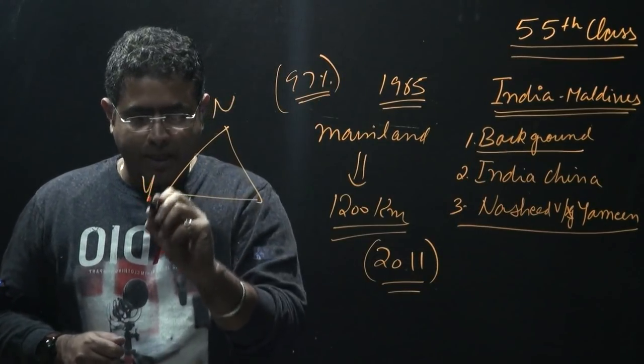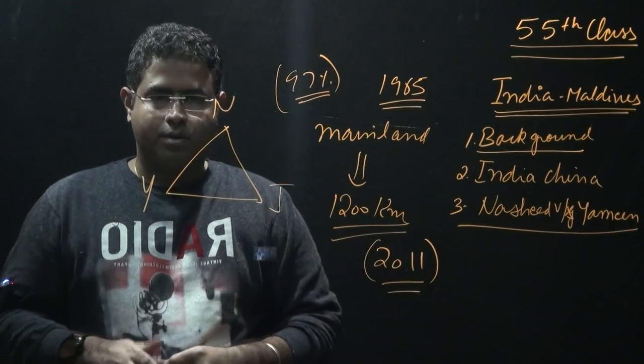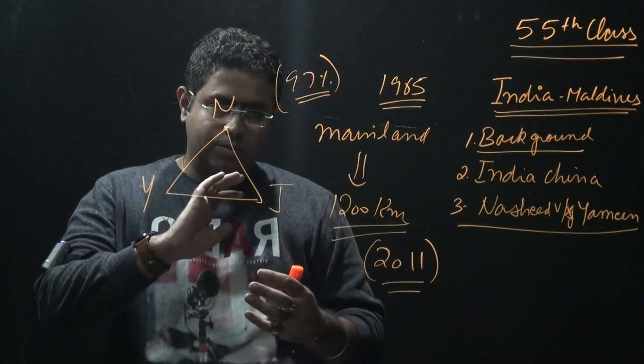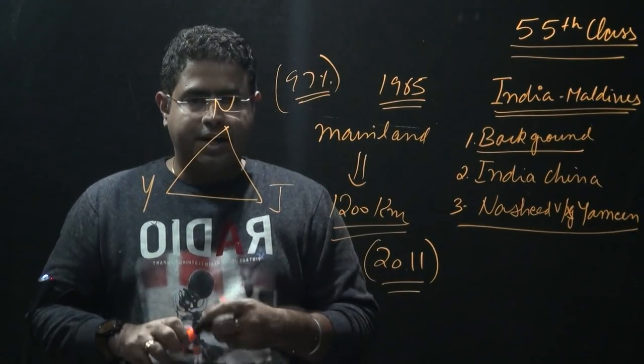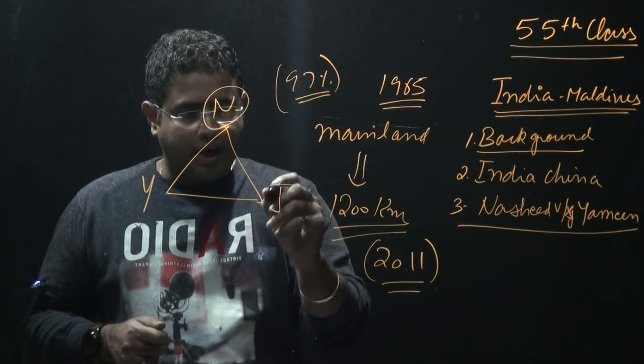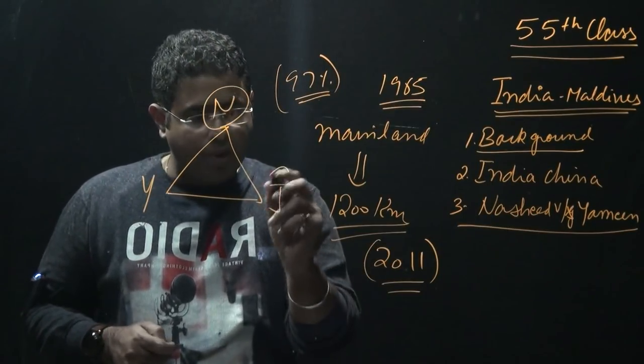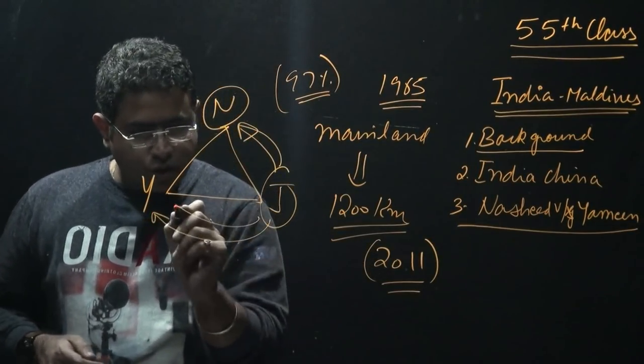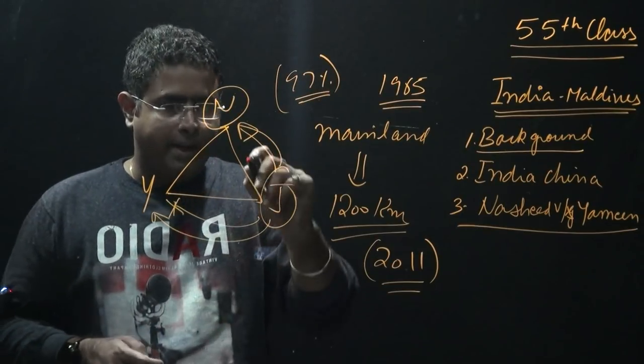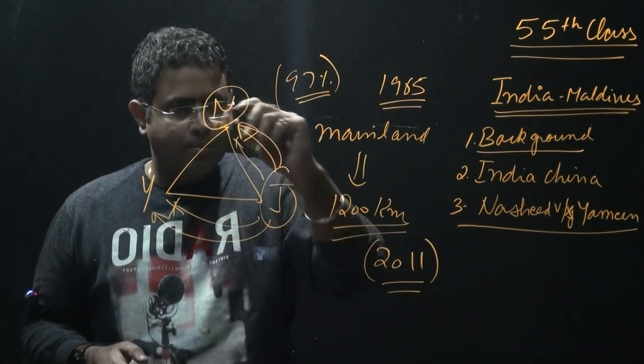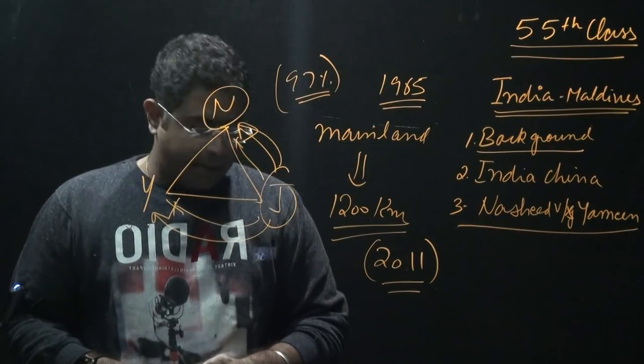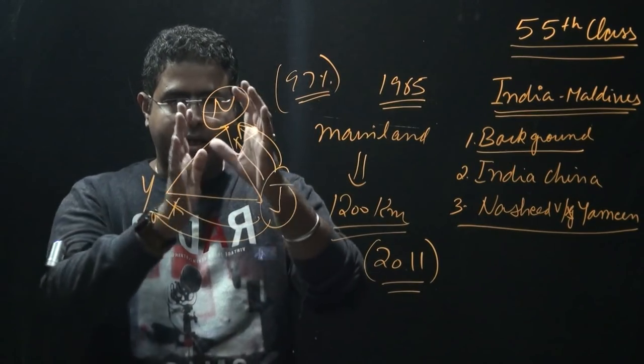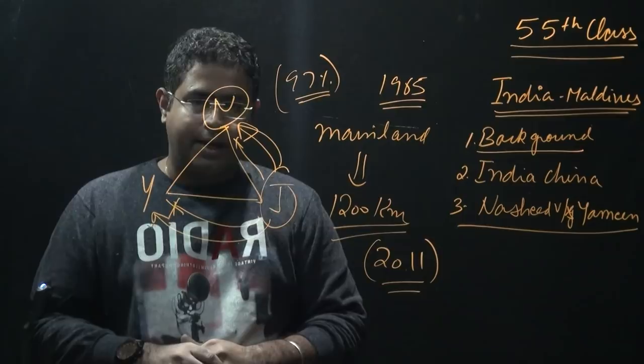India is actually pro-Nasheed. Judiciary earlier was against Nasheed, now it is becoming pro-Nasheed. Earlier judiciary was favoring Yameen, now judiciary is going against Yameen. Emergency has been declared. Things are not happening according to the constitution. By putting corruption charges, Yameen has made a full plan to send Nasheed to jail.